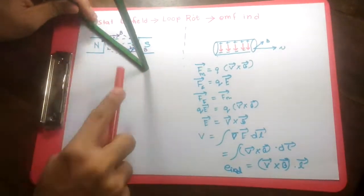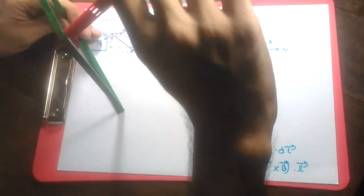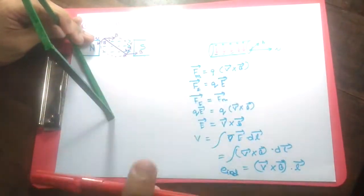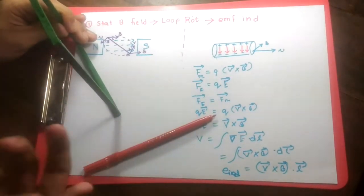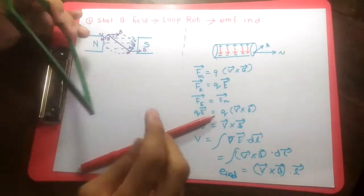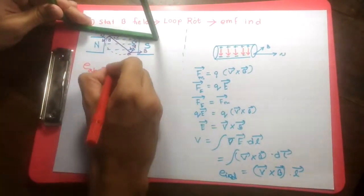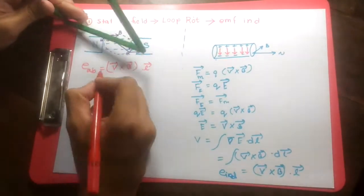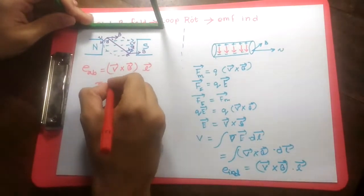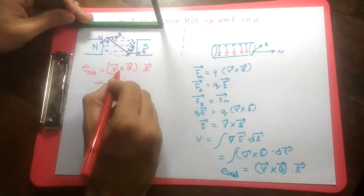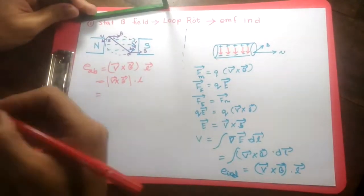In the AB portion, the velocity vector is in this direction and the B vector is in this direction. Using the right-hand rule, V cross B points downward, so there is an induced EMF in the downward direction, meaning the upper end is at higher potential. The EMF of AB from our derived formula is V cross B dot L, and we see that V cross B is parallel to L, so this equals the magnitude V cross B times L times cosine 0, which is simply 1. The magnitude of V cross B is VB sin(θ_AB), where θ is the angle between the velocity and magnetic field vectors.